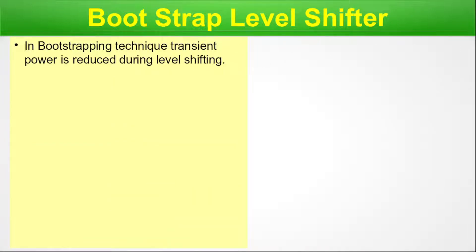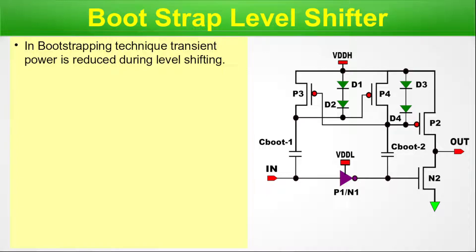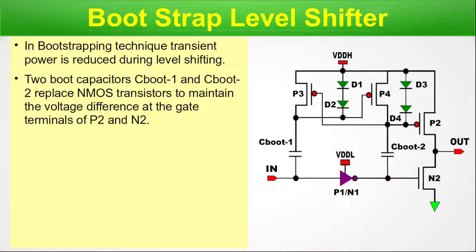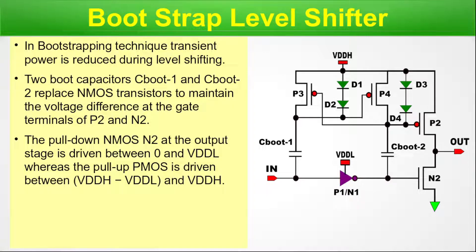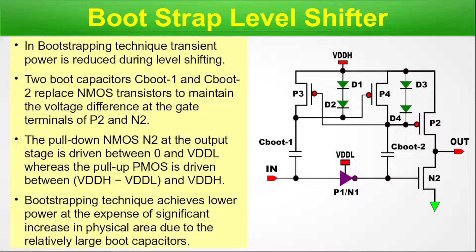Bootstrap level shifter. In the bootstrapping technique, transient power is reduced during level shifting. Two boot capacitors, CBOOT1 and CBOOT2, replace NMOS transistors to maintain the voltage difference at the gate terminals of P2 and N2. The pull-down network NMOS N2 at the output stage is driven by 0 and VDDL, whereas the pull-up PMOS is driven between the difference of VDDH and VDDL, and VDDH itself. Bootstrapping achieves lower power at the expense of a significant increase in physical area due to the relatively large boot capacitors.